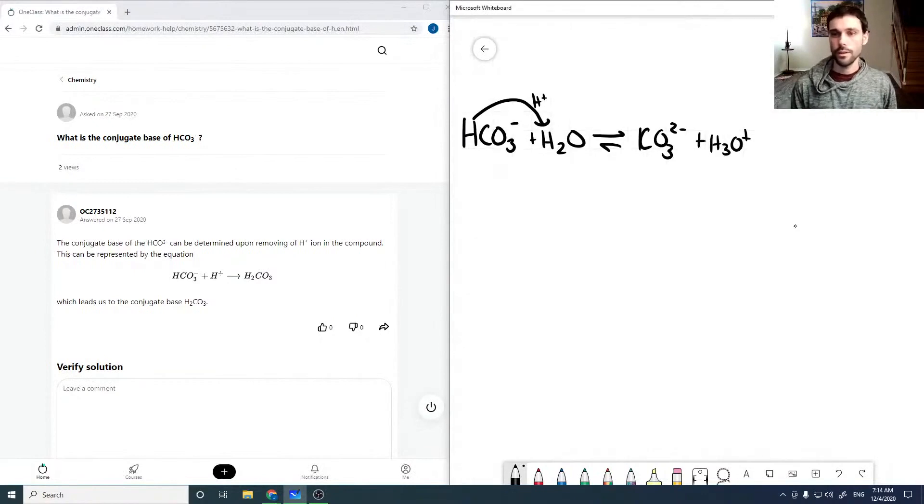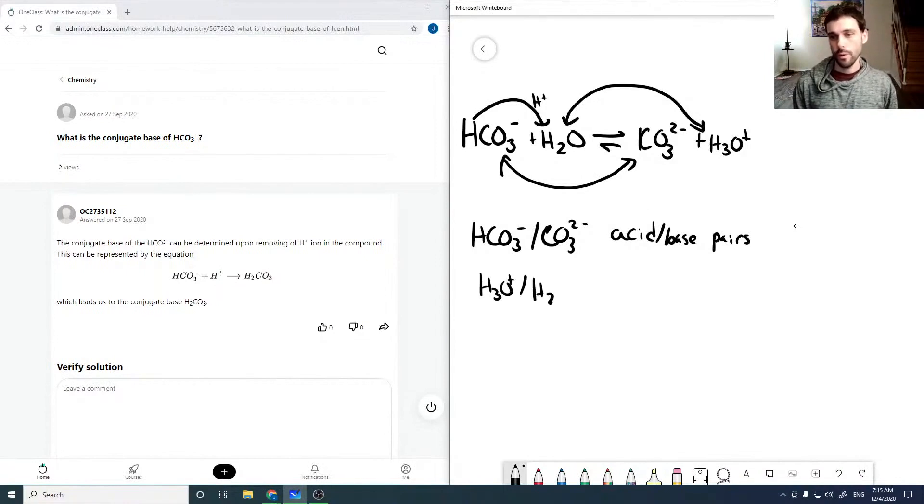And so these guys are acid-base pairs and so are these. HCO3- and CO3 2- are acid-base pairs. And H3O+ and H2O are acid-base pairs.